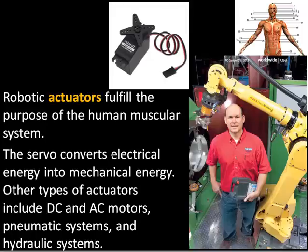The motion that we want to achieve might be as simple as positioning the robot end effector in a desired location, or it might be very complicated, such as achieving smooth motion between one location and another in a particular specified path. That task of figuring out the correct voltages and currents to achieve the kind of motion that we want is called control.